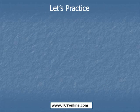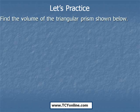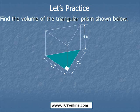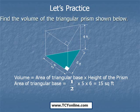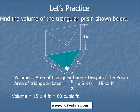Now let's look at this question. We need to find the volume of a triangular prism whose length of the base is 5 feet, the width of the base is 6 feet, and the height is 4 feet. The volume is the area of the triangular base times the height of the prism. Area of the triangular base is 1/2 × 5 × 6 = 15 square feet. Multiplying by 4 feet, we get 60 cubic feet. So the volume of this triangular prism is 60 cubic feet.